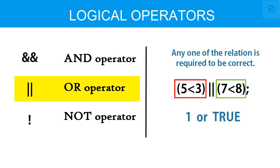If both of the statements were false, then the logical OR would return zero. But at least any one of the relations is required to be correct in order to get the value one, or get true as the return. That is basically what the logical OR does.